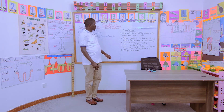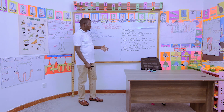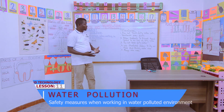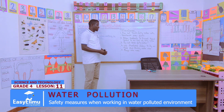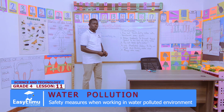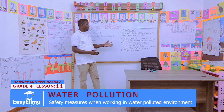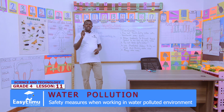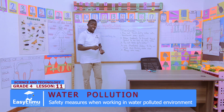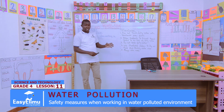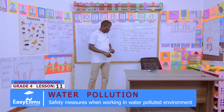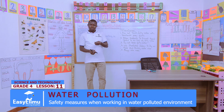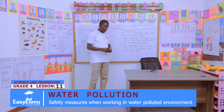These are some of the measures we should observe: Do not touch dirty water with bare hands — instead, wear gloves. Always wear gumboots to prevent direct contact of our feet with dirty water. Do not drink dirty water — remember that water is not safe for drinking; drink only boiled or treated water. And lastly, always wear a mask to prevent bad smells from entering your body.